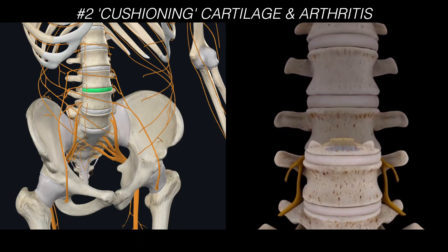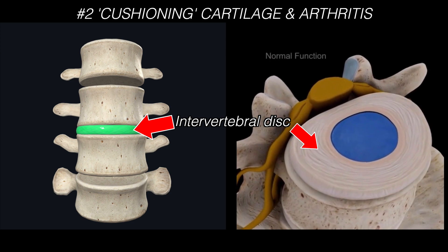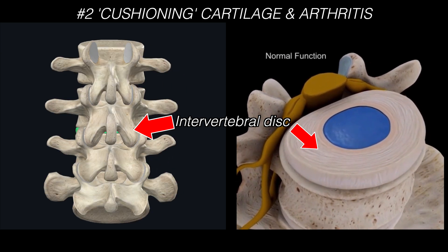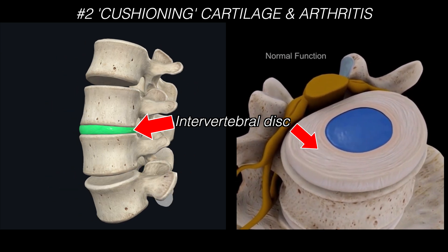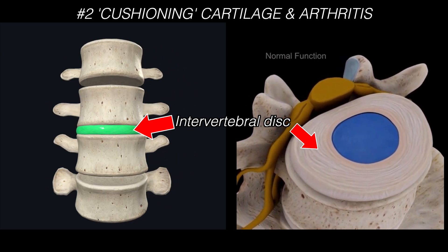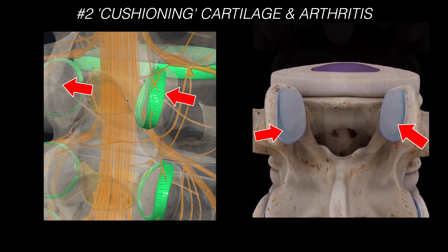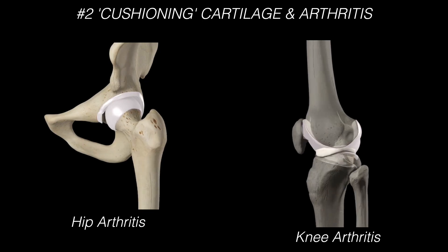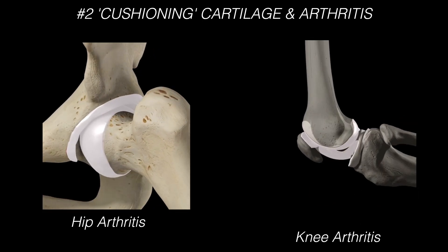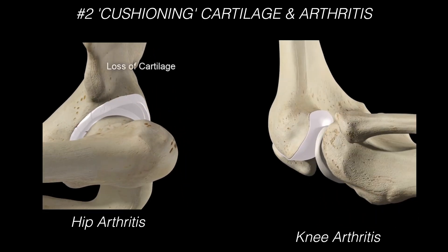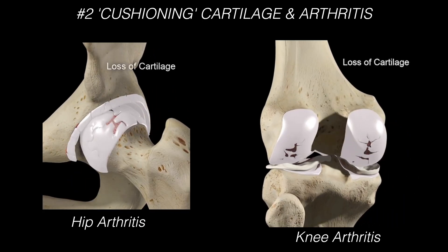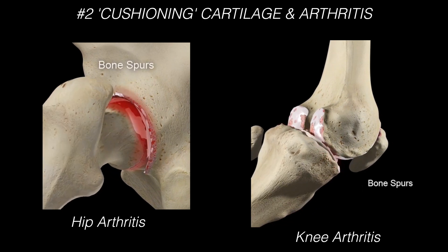There are two areas of the spine that cushion it, allowing for healthy movement: the intervertebral disc between the vertebrae, and the facet joints — fibrous capsules located on the back of the spine. When we age, similar to knee or hip arthritis, we get wear and tear of the cartilage that cushions the end of bones.